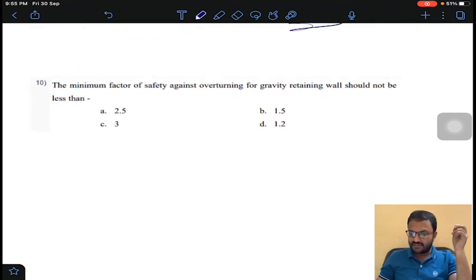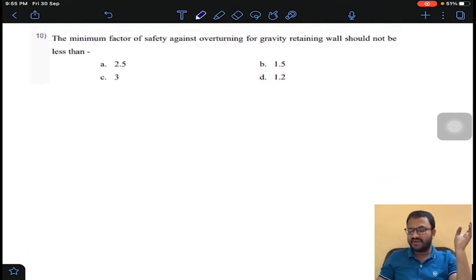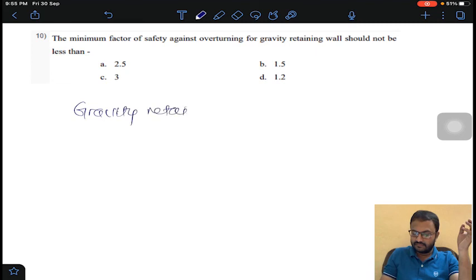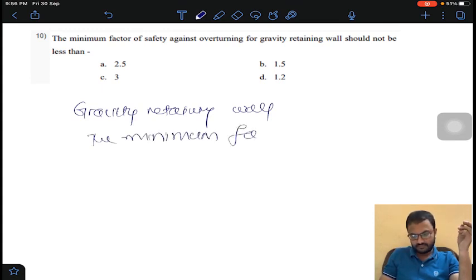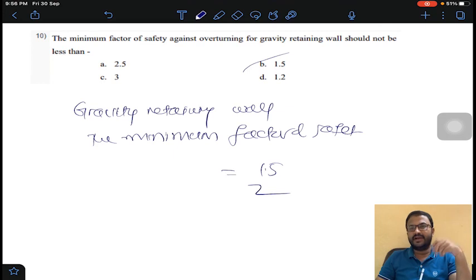Coming to last question of the assignment. The minimum factor of safety against overturning for gravity retaining wall that is to be considered is 1.5. Option B for question number 10. Thank you.